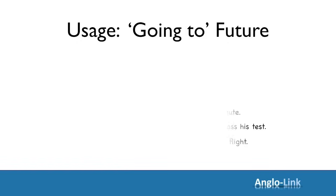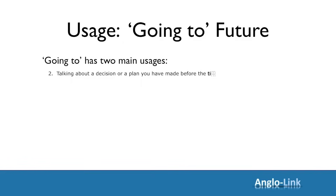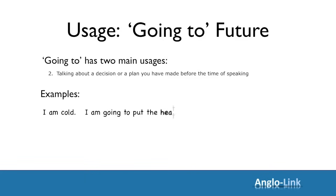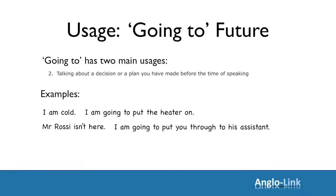Let's look at the second usage of the going to future: when you talk about a decision or a plan you have made before the time of speaking. For example: I'm cold — I'm going to put the heater on. Mr. Rossi isn't here — I'm going to put you through to his assistant. I know you want to see the town — I'm going to show you around.